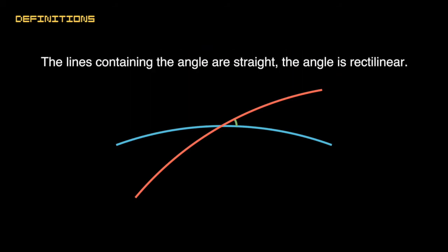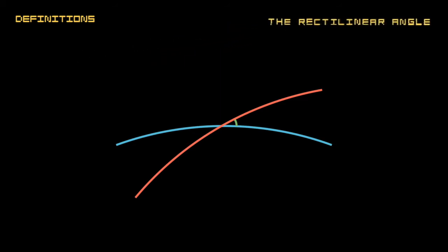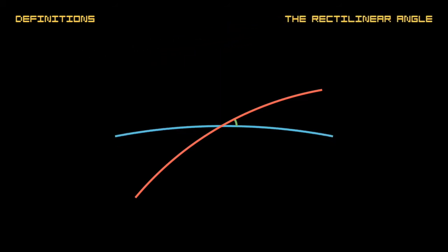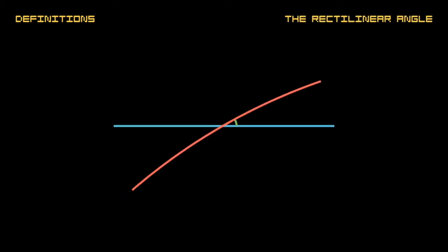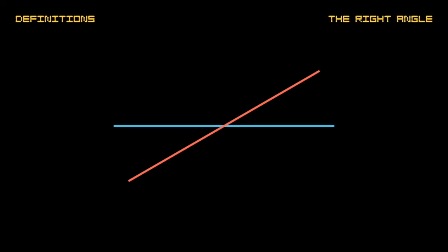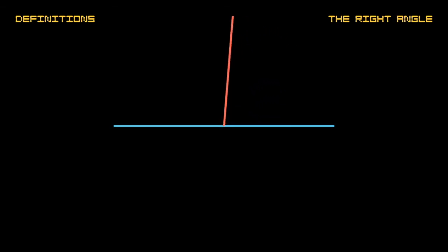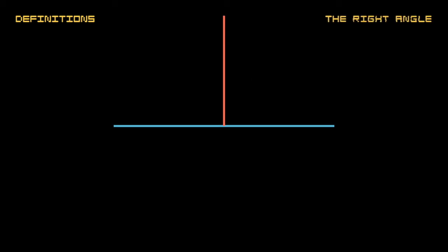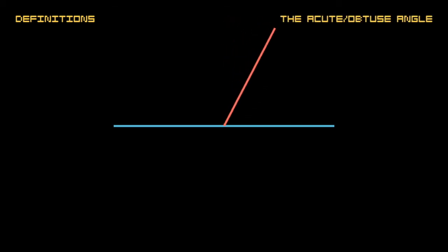When the lines containing the angle are straight, the angle is called rectilinear. When a straight line standing on a straight line makes the adjacent angles equal to one another, each of the equal angles is right, and the straight line standing on the other is called a perpendicular to that on which it stands. An acute angle is an angle less than a right angle. An obtuse angle is an angle greater than a right angle.